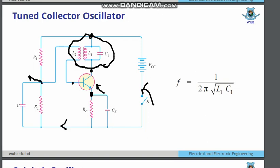Here we can find the V input and the V output in the general kind of voltage divider bias circuitry. In that part, there is a tank circuit that consists of L1 and L2 — two inductors. The first inductor is connected with the base, and the second inductor and capacitor form the tank circuit. The total is known as the tank circuit, and that is the main element in a tuned collector oscillator.